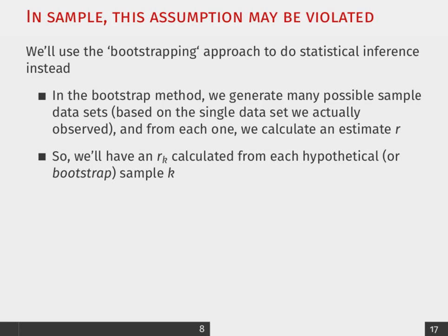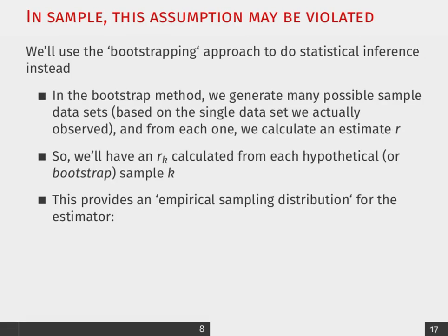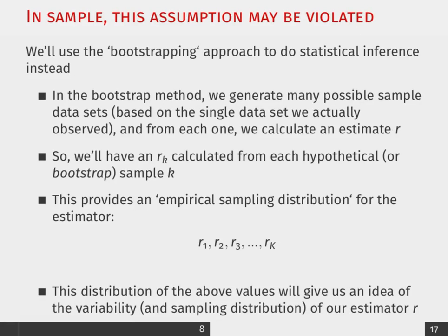So what we're going to do essentially with bootstrapping is we're going to run or conduct k number of samples. So we will generate one sample, we will get a correlation coefficient for that one sample of 50 observations. Then we'll put all those observations back into our bigger sample. Then we'll do a second subsample, we'll get another correlation coefficient. And when we do this k times, so we can do this 50, 50 bootstrapping rounds, we can do it 100 times, 100 bootstrapping rounds. And this is going to give us an empirical sampling distribution for the estimator or our correlation coefficient r.